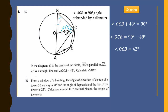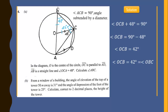OB and OC are both radii, so triangle OBC is an isosceles triangle, and the base angles must be equal. Therefore this angle is also 42 degrees. Angle ABC and angle OBC are formed at the same vertex, so they must be equal — angle ABC equals 42 degrees.